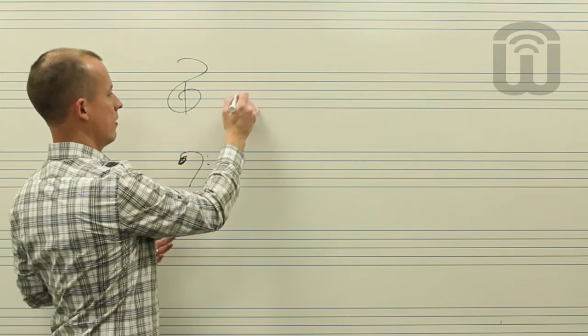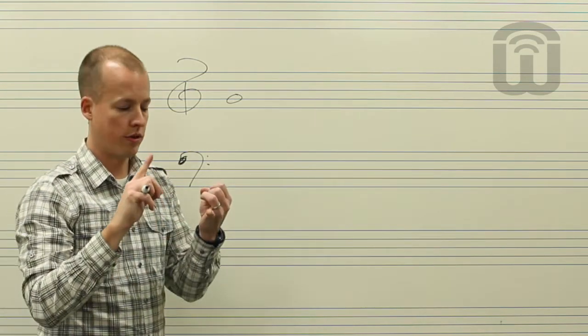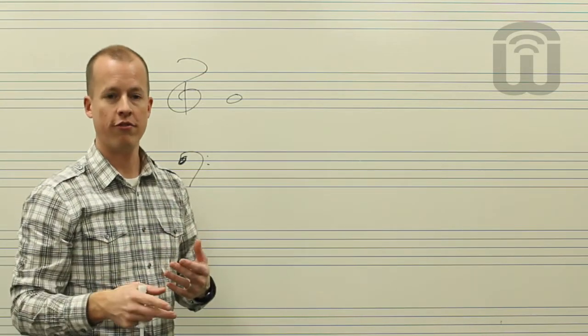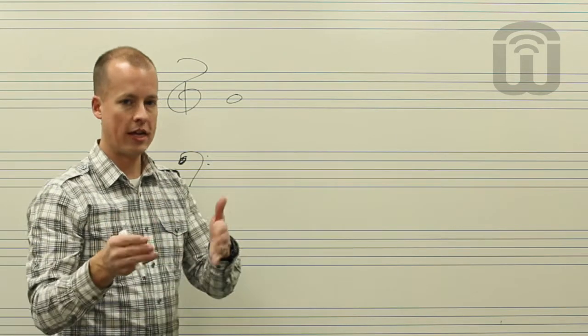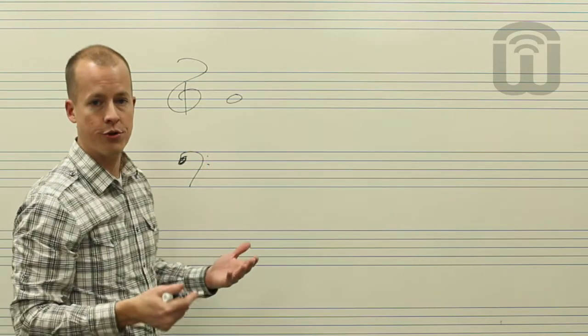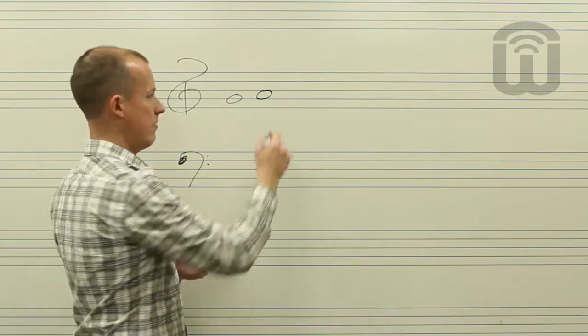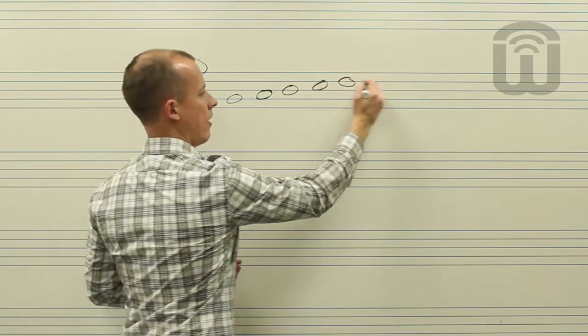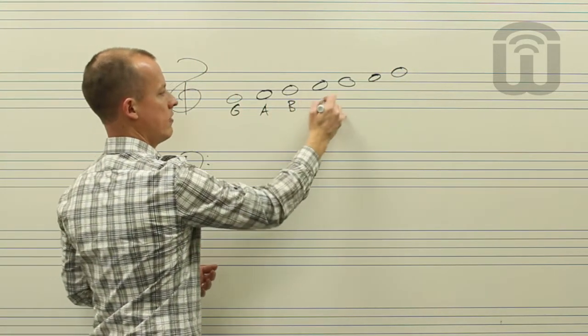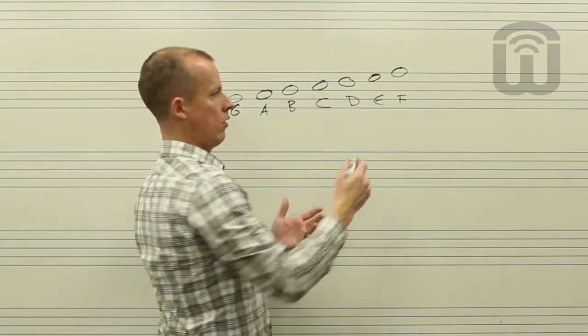So if we call this a G clef, we can know that this note on the second line is G. From there we're going to use two things: we're going to know that notes go up and down the staff according to line space line space, and we're going to use the musical alphabet which goes A through G. So if this is G, our next note higher is going to be A on the space, and then the next note up is going to be on a line, and we just go space line space line. And if this is G, this is A, B, C, D, E, and F.